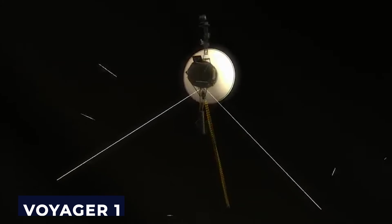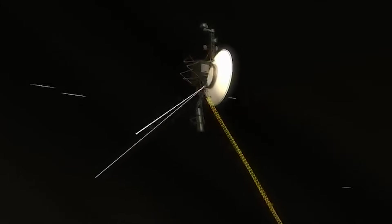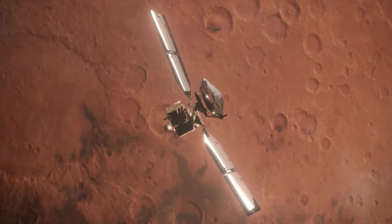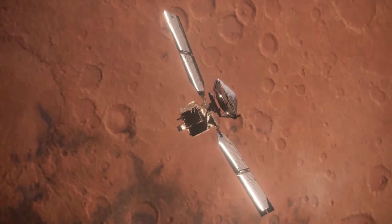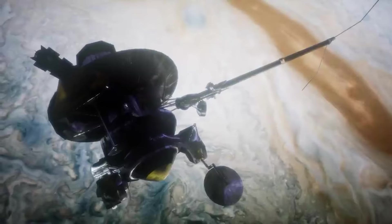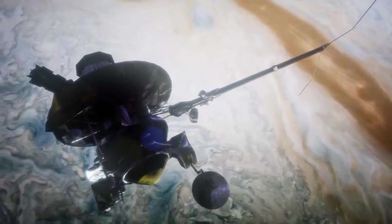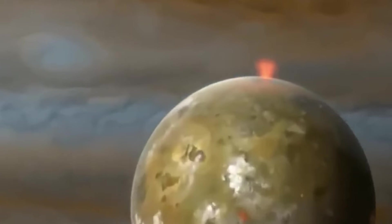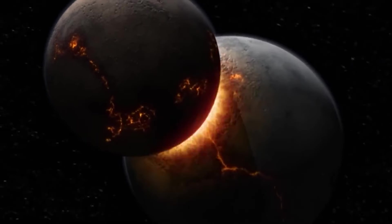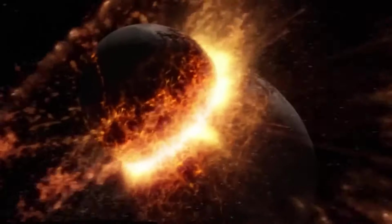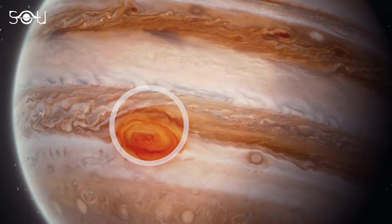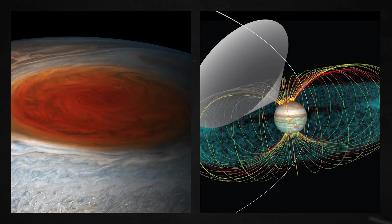Voyager 1 made its first encounter with a planet in March 1979 as it conducted its closest approach to Jupiter. Here, it captured detailed images and data of the giant planet and its moons, notably revealing the complex structure of Jupiter's atmosphere and its moon's characteristics. It also discovered volcanic activity on Jupiter's moon Io, identifying it as the most volcanically active body in the solar system. It captured the intricate structure of Jupiter's cloud patterns, the Great Red Spot, and its magnetic field.